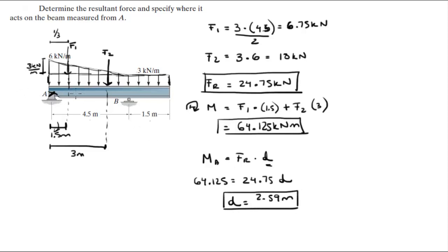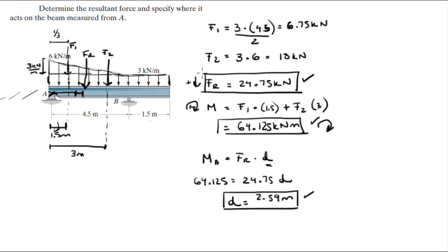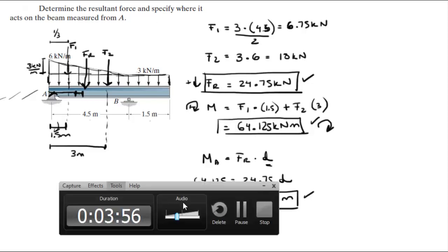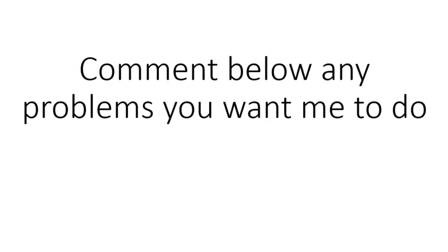Now, is D to the left or to the right? It's to the right because the moment is clockwise — if the moment is clockwise, D has to be to the right of A, if the force is going down. So it's at 2.59 meters, right about here — that would be FR. Final answer for the resultant force and for the moment, assuming down is positive. Please comment below if you want me to do any problems and I'll be happy to help.